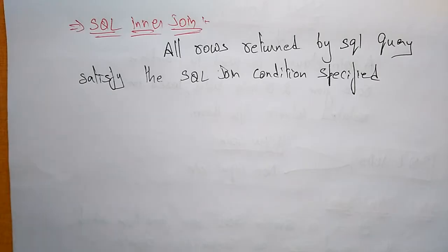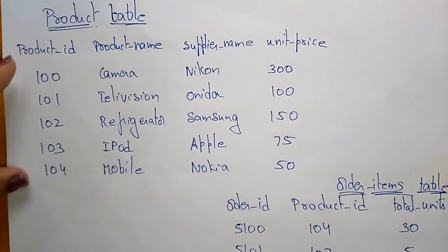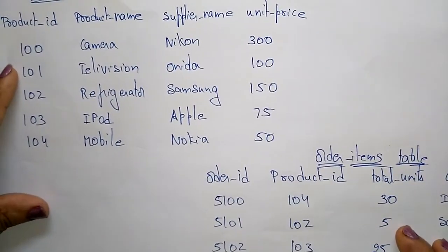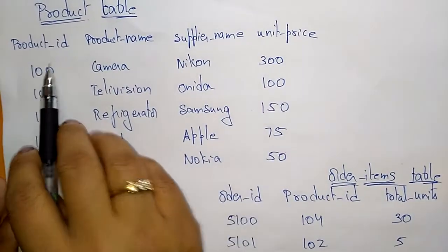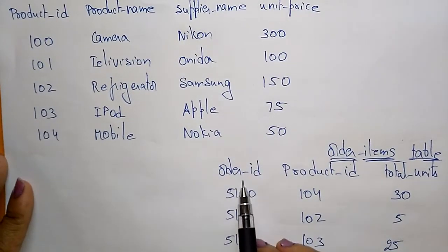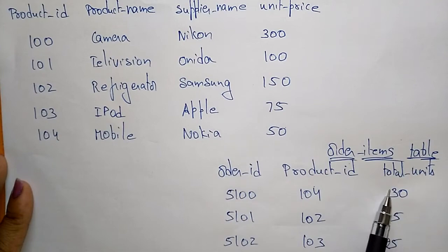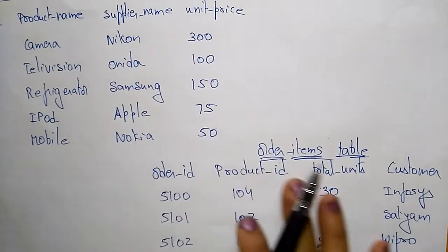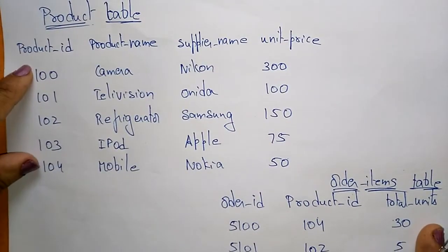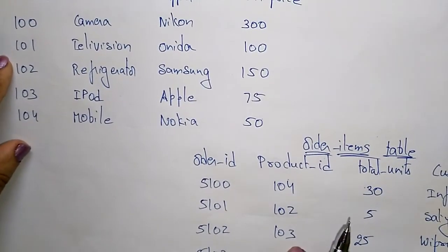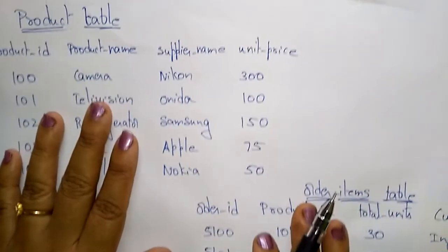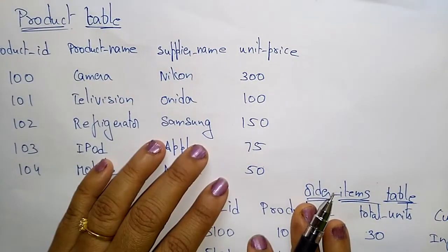Let us take an example. Here I am taking two tables — one is a product table and another is an order item table. The product table has product ID, product name, supplier name, and unit price. The order item table has order ID, product ID, total units, and customers. The product ID is the primary key in the product table and a foreign key in the order item table. Now I have to join these two tables using equi join.